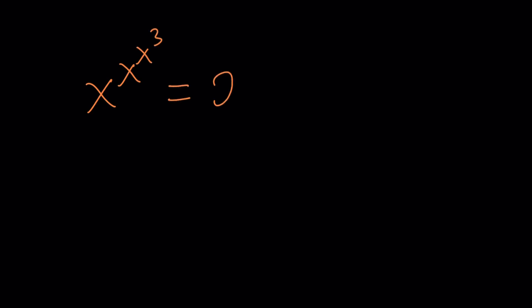We have x to the power x to the power x to the power 3 equals 2 to the power 2 to the power 16,386. Now, what is so special about 16,386? That's a very special number — it's actually close to a power of 2. I kind of memorized some powers of 2 because it's just fun.